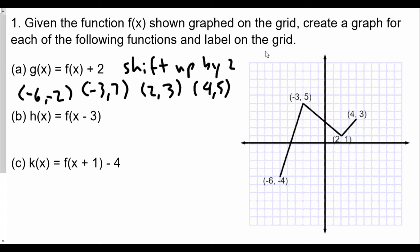So we're going to first plot those points. So -6, -2 is right over here. -3, 7 is over here. 2, 3 is over here, and 4, 5 is right over here. And so we're going to now connect these coordinates here with a segment.